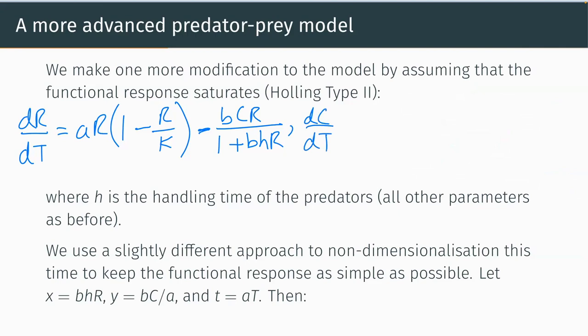The Holling Type 2 predation term is: attack rate b times consumer density times resource density R, divided by one plus b times handling time h times R. This is different from the case with R squared, which gives a sigmoidal response indicating prey-switching at low density. The consumer equation dC/dt includes a conversion efficiency epsilon between zero and one, the same predation term, and a linear death rate minus dC.